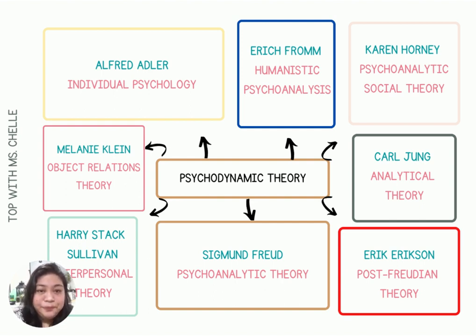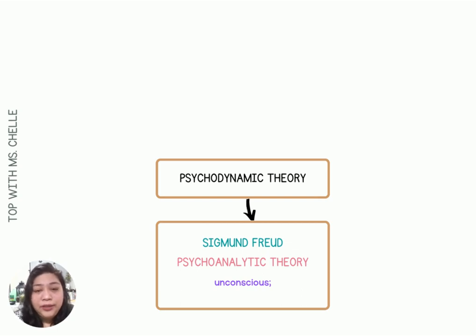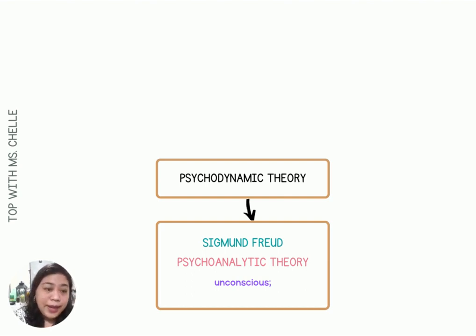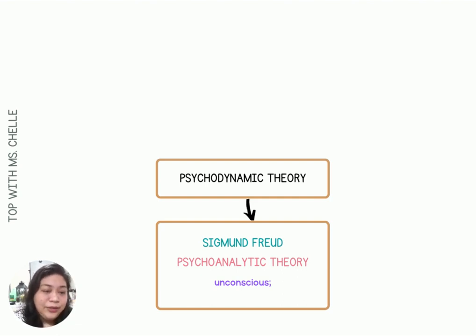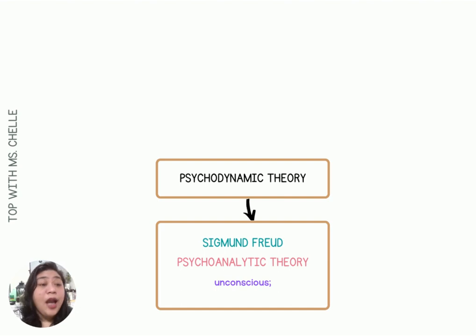We will begin with Sigmund Freud — the legend, the man who started it all. In Freudian theory, the human mind is structured into two main parts: the conscious and the unconscious mind. His psychoanalytic theory relies heavily on the unconscious. The conscious mind includes all of the things that we are aware of — things that we can easily bring into our awareness.